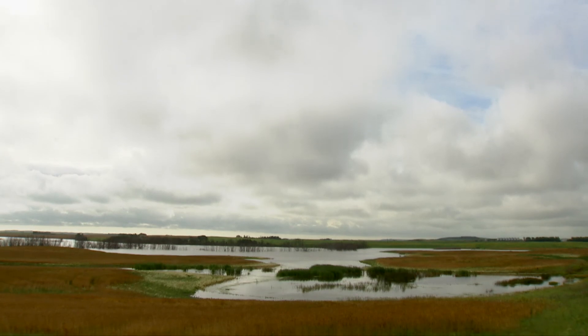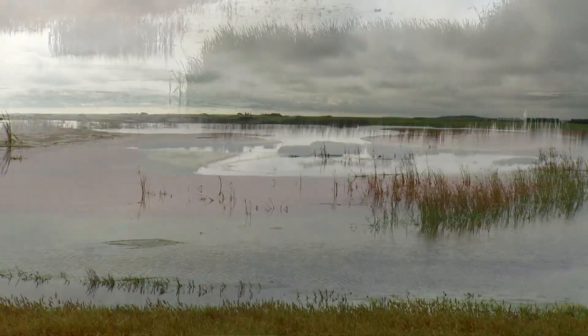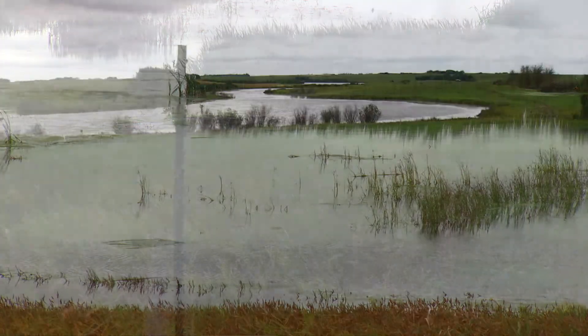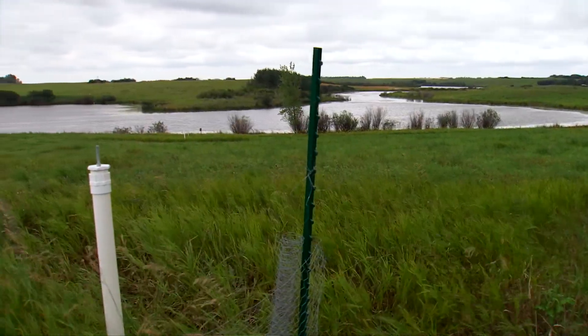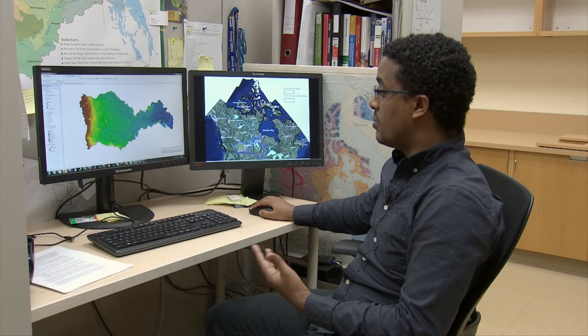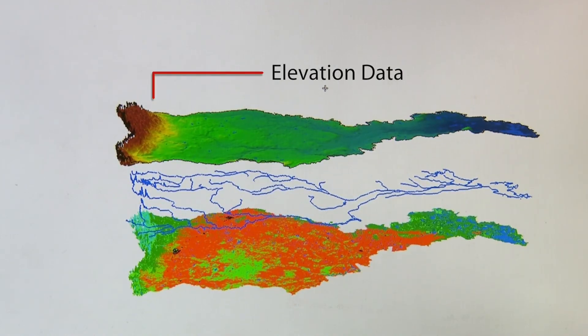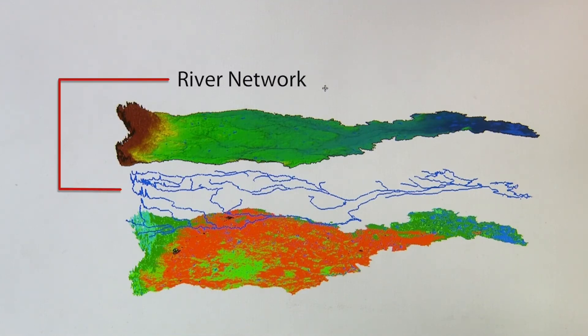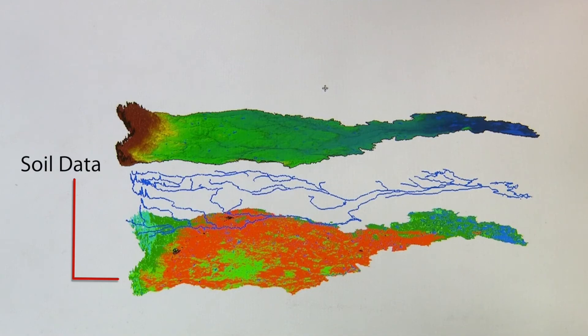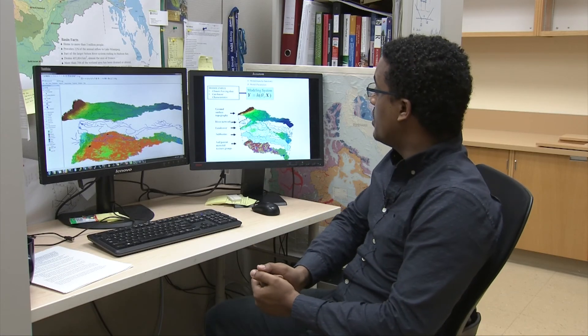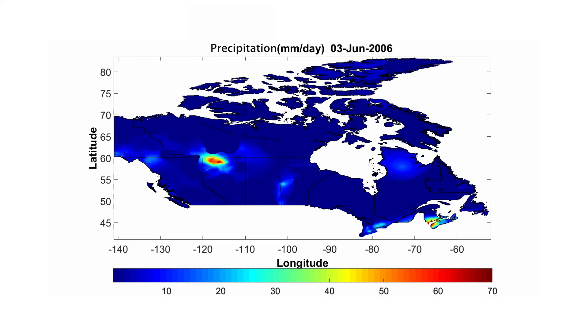There's a group of scientists mainly focused on natural processes and representing them as closely as possible in watershed models. In order to do the hydrological modeling, I extract different relevant inputs. One of them is ground surface topography. As you can see here on the top, we have elevation data, river network information, as well as soil data of the basin. To drive the model, we need climate data — we use ground-based data as well as satellite observations.